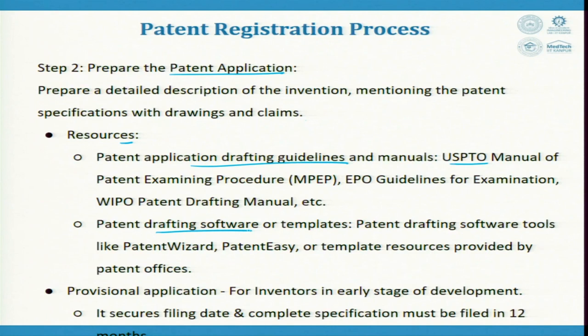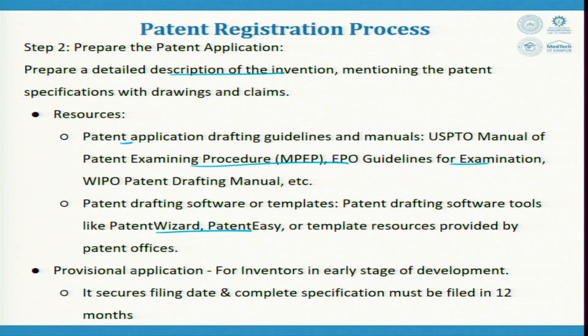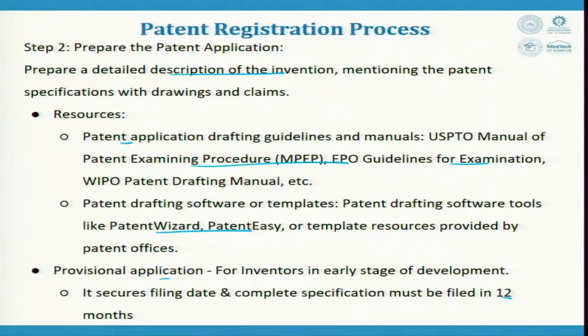For inventors in early stage of development, there is a provisional application. You can file a provisional application when you have an idea but have not fully developed it. It secures your filing date and the complete specification must be filed within 12 months. At the end of 12 months, if not completed, the application enters public domain and neither you nor anyone else can use it.